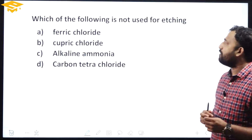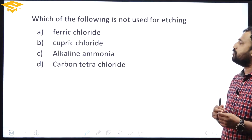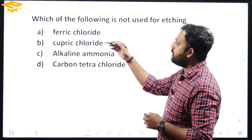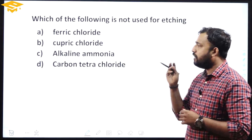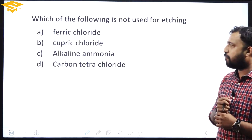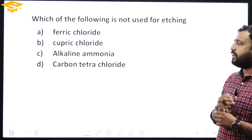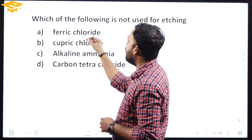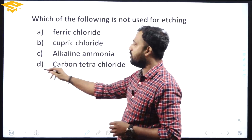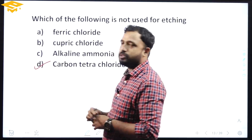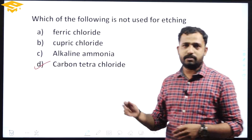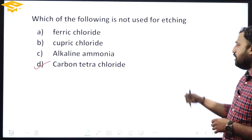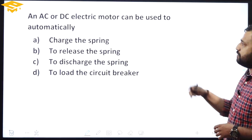Which of the following is not used for etching? Option A: ferric chloride, B: cupric chloride, C: alkaline ammonia, D: carbon hydrochloride. These three — ferric chloride, cupric chloride, and alkaline ammonia — are used for etching. Carbon hydrochloride is not used for etching. Very direct, simple question.